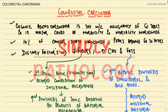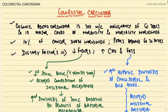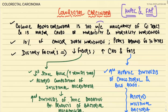Today we are going to start reading about colorectal carcinoma, and we will also discuss certain syndromes like HNPCC and familial adenomatous polyposis. Colorectal carcinoma is the most common malignancy of the GI tract and is a major cause of morbidity and mortality worldwide, responsible for approximately 10% of cancer deaths. The peak age is around 60 to 70 years.